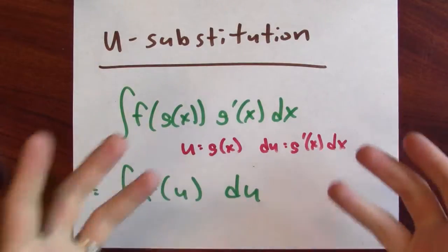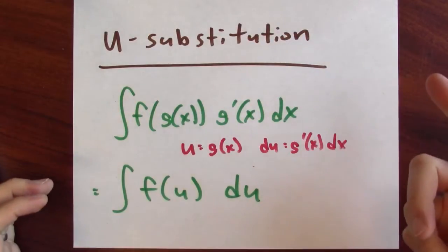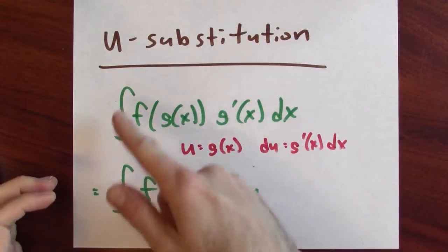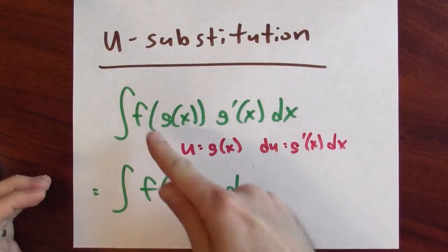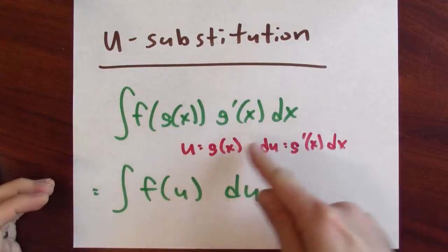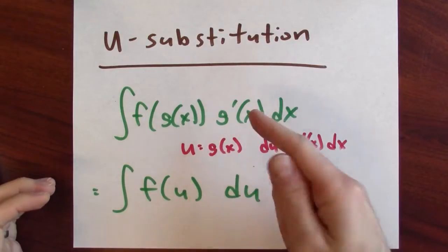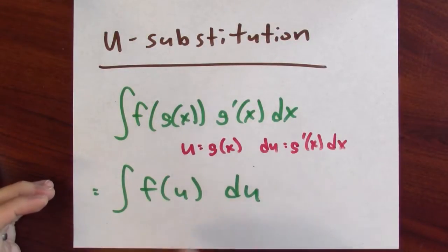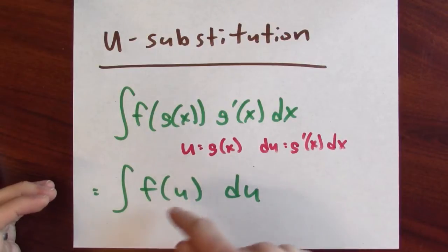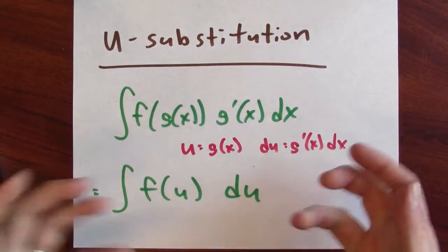We've already learned about the chain rule in reverse. That technique was u-substitution. I want to anti-differentiate a function evaluated at g times the derivative of g. I can make a substitution and reduce that down to anti-differentiating f of this new variable u.